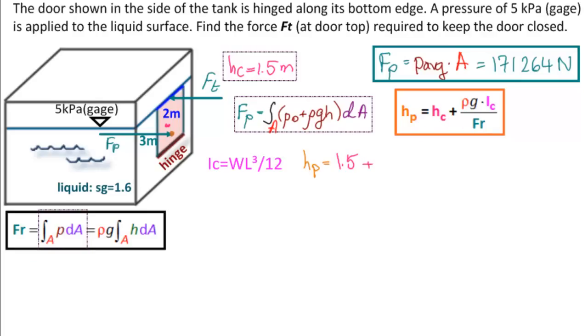Let's substitute. We get Hp equals 1.5 meters for H centroid, plus we would have rho is SG times rho water times G. And then we have Ic is WL cubed. Well, W is 2, L is 3, so 3 cubed, divided by 12, divided by FR, 171,264. And notice that the units all go together. We will get meters in the end.